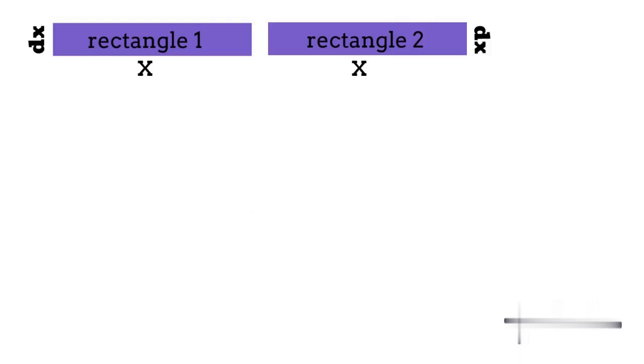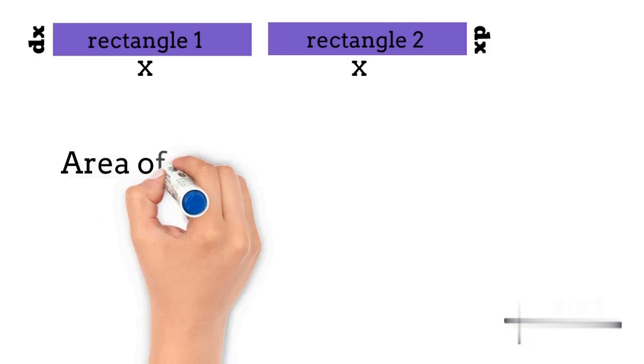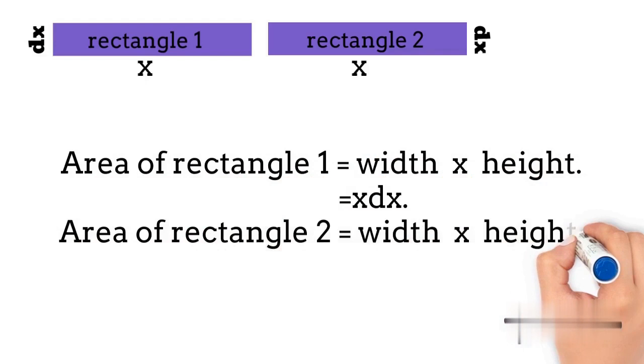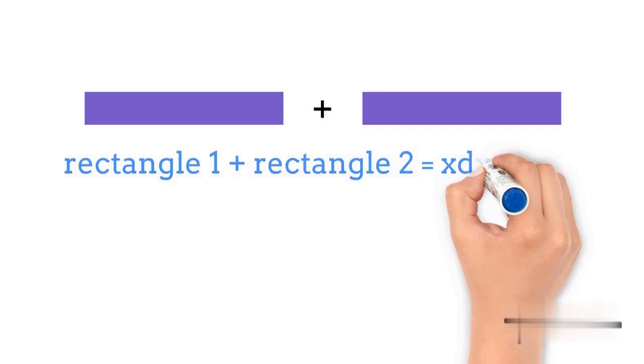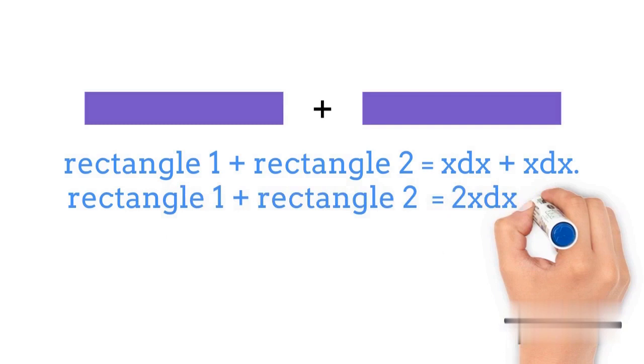Now we know the formula for the area of rectangle. So we just find the area of rectangle one and rectangle two. We see that both these rectangles have same area that is x dx. Now since these rectangles are the increased area of that original square, we add these two rectangles to find the total amount of increased area.